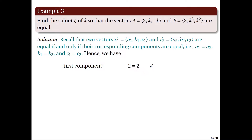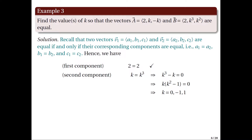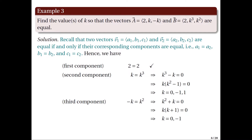Next, the second components must be equal: K = K³, or K³ − K = 0, which holds for K = 0, −1, or 1. For the third components: −K = K², or K² + K = 0, which is true for K = 0 and K = −1. Observing all three conditions, they are all satisfied when K = 0 or K = −1. Hence, vector A equals vector B when K = 0 or K = −1.